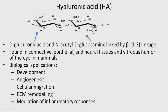Let us look at hyaluronic acid. It is obtained from cells and bacteria. Hyaluronic acid is made up of glucuronic acid — this is called glucuronic acid — and N-acetyl glucosamine. So we have the acetyl group (CH3CO) and the amine group. N-acetyl glucosamine is linked by a beta 1,3 linkage — you can see positions 1, 2, 3. So hyaluronic acid is made up of glucuronic acid and N-acetyl glucosamine linked by beta 1,3.